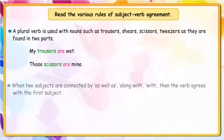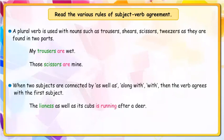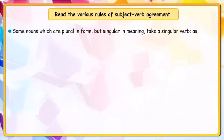When two subjects are connected by 'as well as', 'along with', or 'with', the verb agrees with the first subject. For example: 'The lioness, as well as its cubs, is running after a deer.' 'The parents, along with their son, are waiting outside the school gate.'